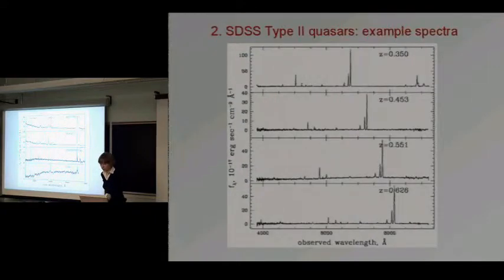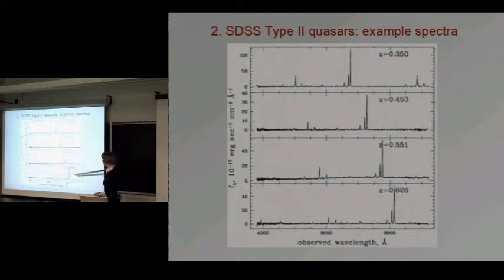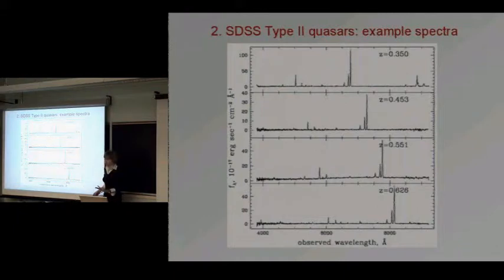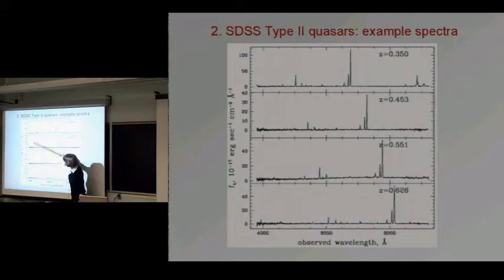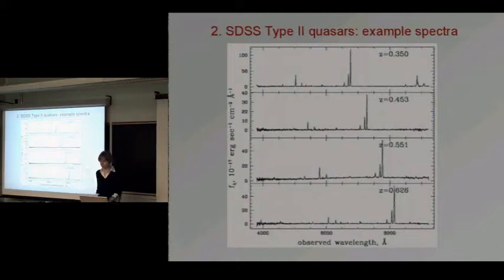This is the basis for the standard diagnostic diagrams used to distinguish star-forming galaxies from Seyfert 2 galaxies. Our objects show O3 and H-beta at very high ratios with practically no continuum because the galaxy is much fainter than these lines. This little line — a Ne V line — is only ever present in AGN because it's a high-ionization line.